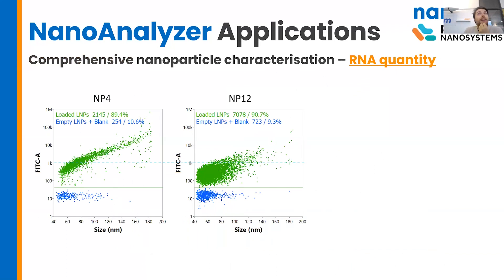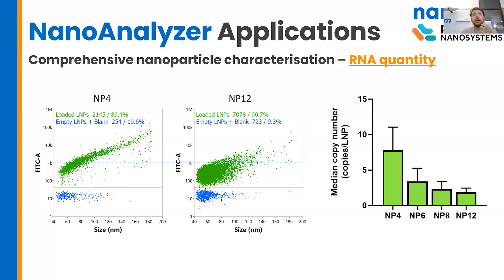There's a reason I wanted to share this data. As we get into describing the RNA quantity loaded into these particles, we can start to see some significant differences. I'm showing the dot plots for two formulations: on the left, the MP4, and on the right, the MP12. Size of the particles is on the x-axis and fluorescence representing RNA quantity is on the y-axis. In the MP4 population, there are quite a lot of particles which are more fluorescent and therefore holding more RNA. If we quantify the amount of RNA contained by these LNPs, we get a really nice gradation of mRNA copies as we increase the MP ratio.